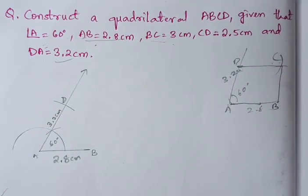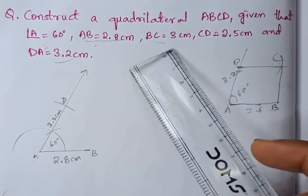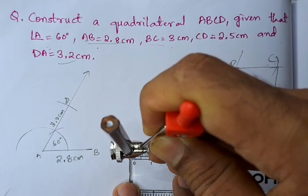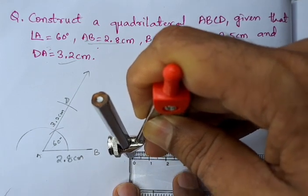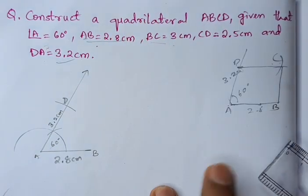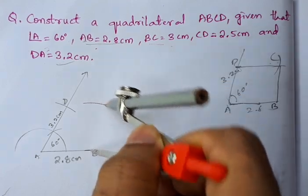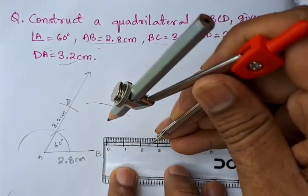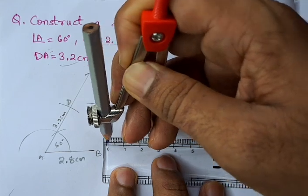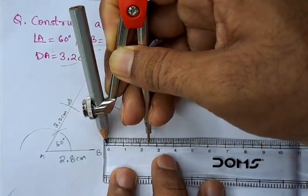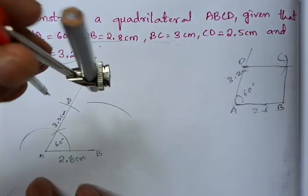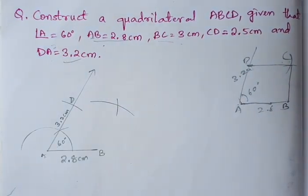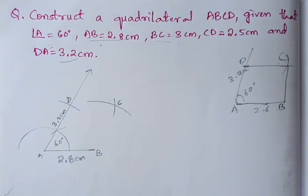Next, what is left is C. From B to C it is 3 centimeters, so we take the radius of 3 centimeters — this is B to C. Then C to D is 2.5 centimeters, so from D we draw an arc of 2.5 centimeters. The intersection gives us point C. Let us join these points.